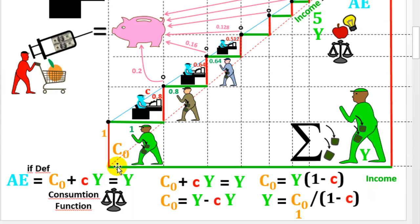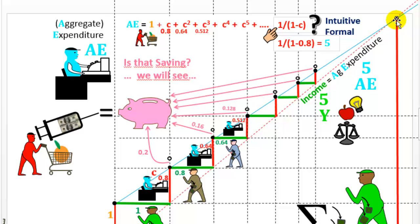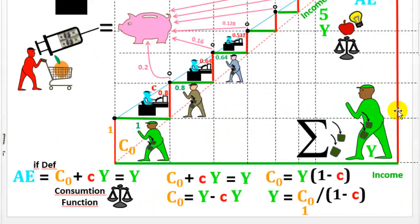If we define aggregate expenditure with this consumption function, then in equilibrium, aggregate expenditure is equal to income, which is this point here. Aggregate expenditure, this red line, equal to income, this green line.